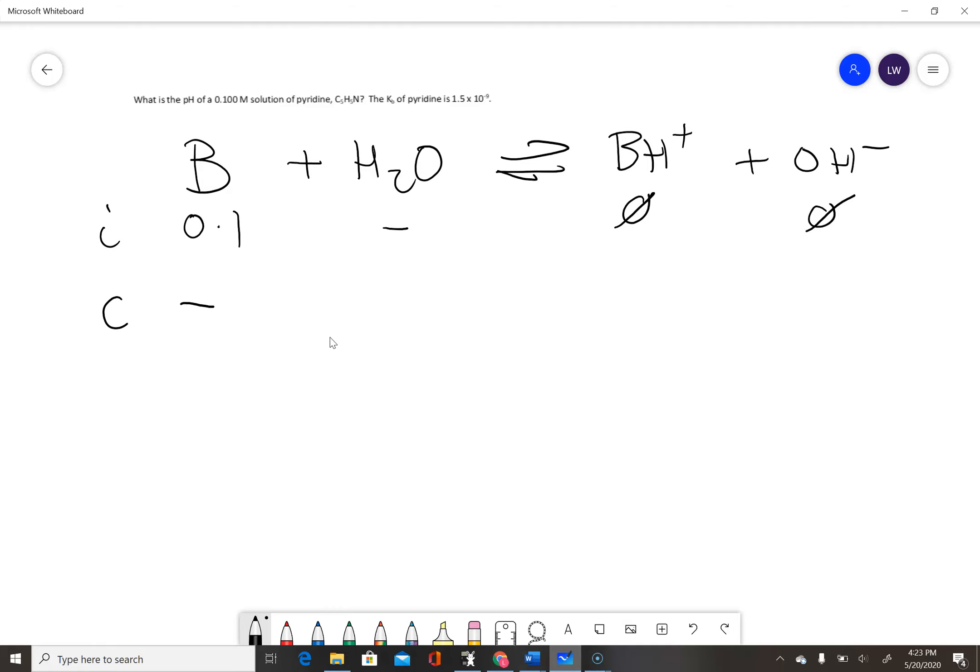As it comes to equilibrium, the pyridine concentration decreases by x. We won't worry about the water. The conjugate acid concentration increases by x, and the hydroxide ion concentration increases by x. At equilibrium, we'll have 0.1 minus x of pyridine, x of conjugate acid, and x of hydroxide ion.